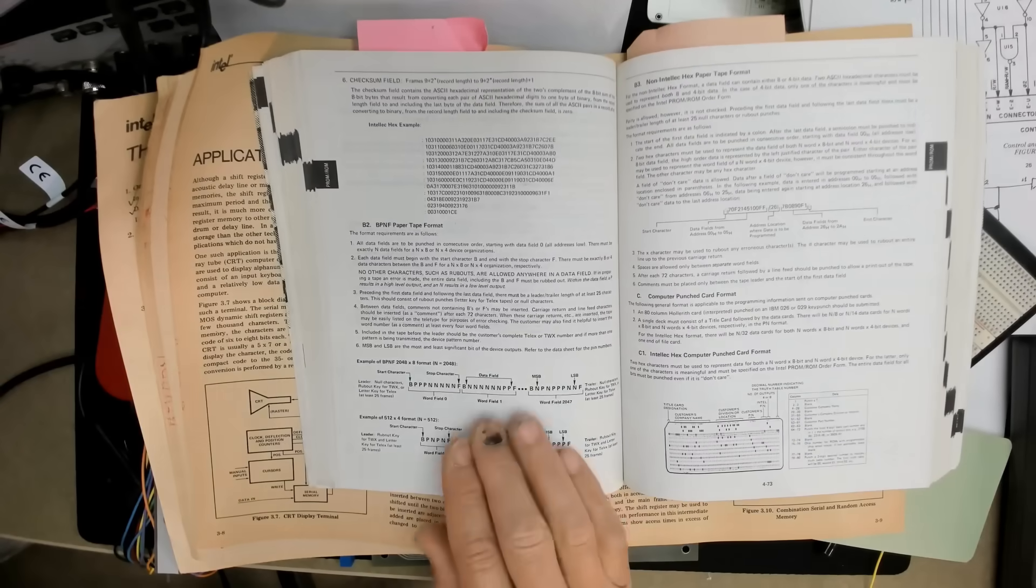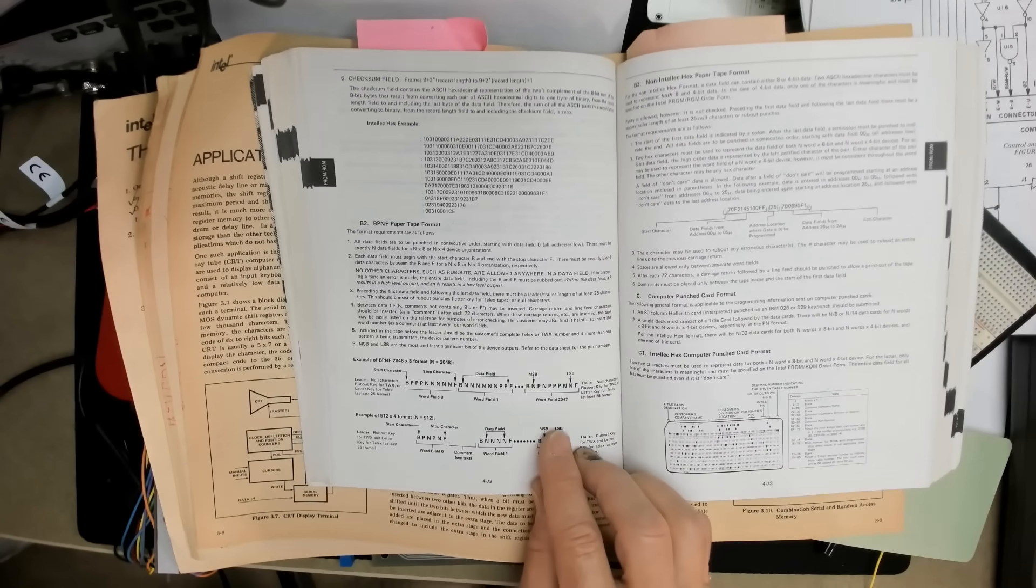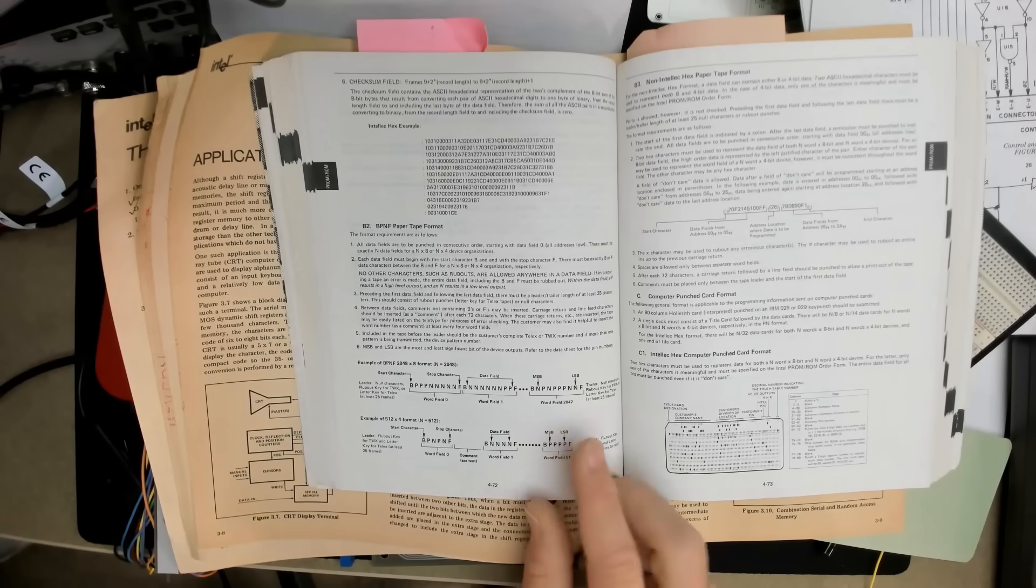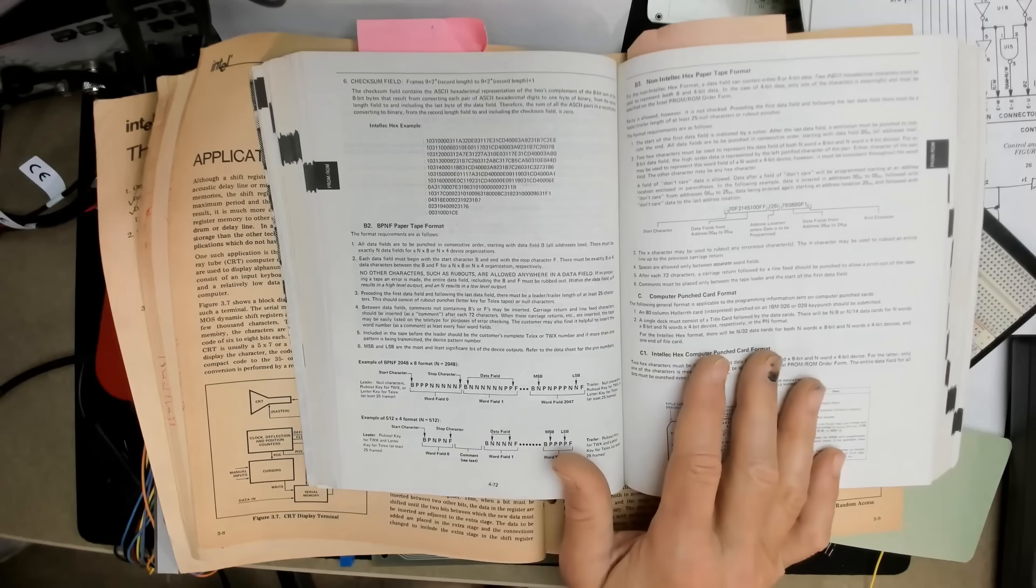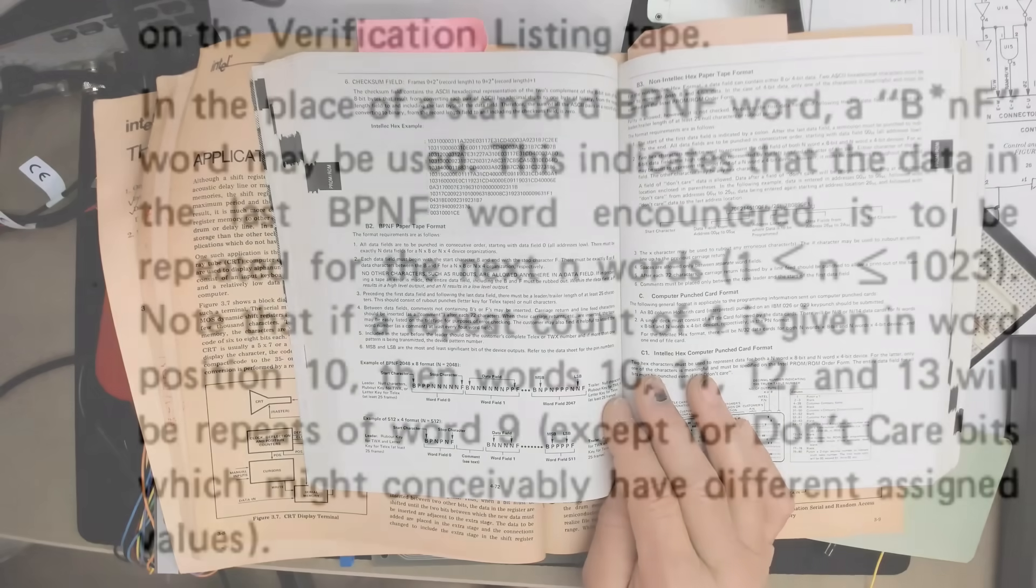So back to those two exceptions to the P and N rule that I mentioned earlier. There was a shortcut if the entire ROM contents was not going to be programmed. So leaving space at the end or if they were unused memory locations within the ROM.